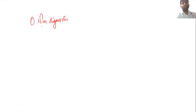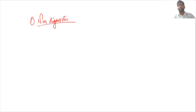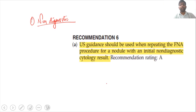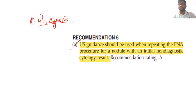When the FNAC report comes out as the first Bethesda category — non-diagnostic — we go for a repeat FNAC. The American Thyroid Association recommends that the repeat FNAC should be done under ultrasound guidance, because you might miss the nodule if it is not done with image guidance.